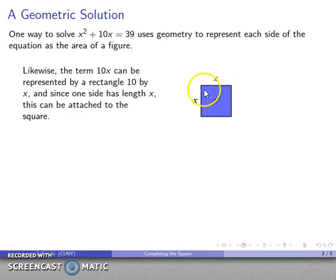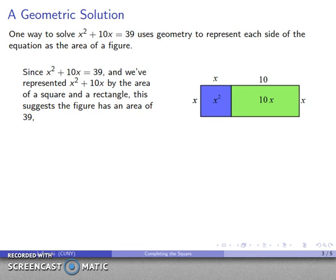So what that means is I can take my square and I can attach this 10 by x rectangle to the end of the square and I produce a larger figure that looks something like that. And now if I want to think about this problem as something to solve, I have x squared plus 10x equals 39, and so that's this figure here has an area of 39, and I can solve this equation if I can find the length and width of the figure.